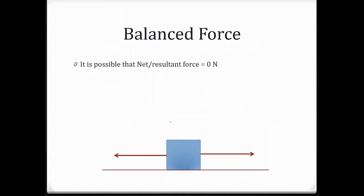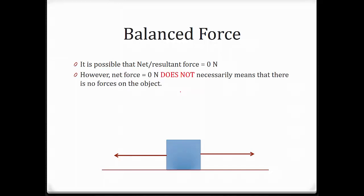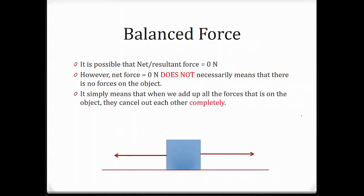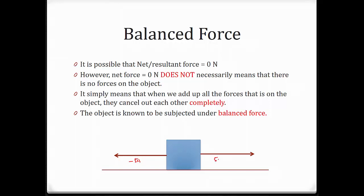What about balanced force? It is possible that the net or resultant force is equal to 0. But net force equal to 0 doesn't necessarily mean there are no forces on the object — it just means that if we add up all the forces, they cancel each other out completely. For example, if this is 5 Newton and negative 5 Newton, adding them up gives negative 5 plus 5 equals 0. So there is a balanced force on this object.